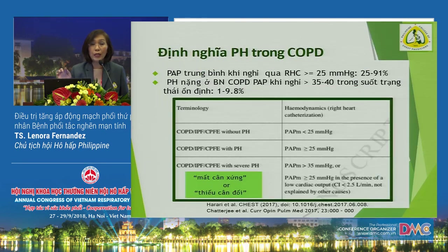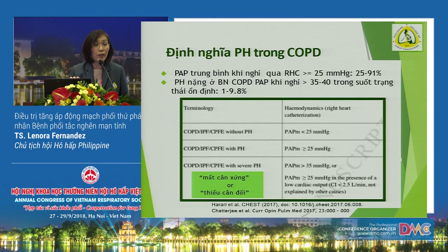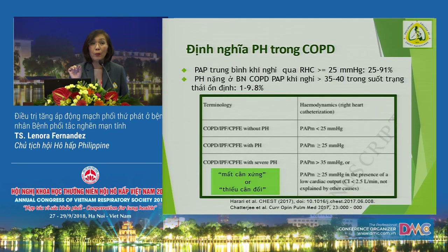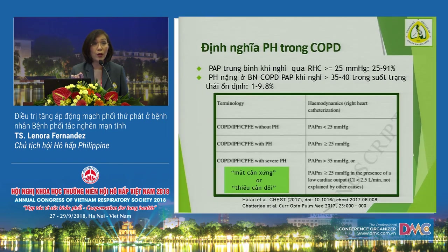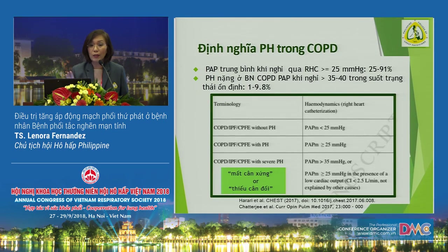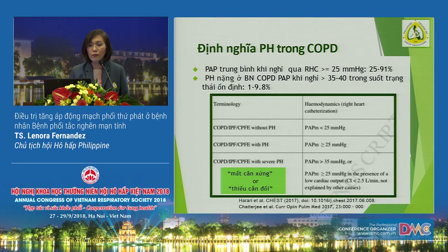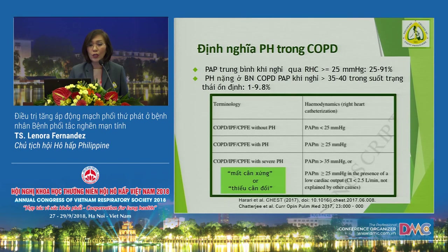On the 2D echo, we need to have a tricuspid regurgitant jet to get a pressure gradient, which will be an approximate of your pulmonary artery systolic pressure — just an estimate, but good enough. So we say there is pulmonary hypertension if it's 25 and above, and severe pulmonary hypertension if it's more than 35. We also call this out-of-proportion pulmonary hypertension in COPD.